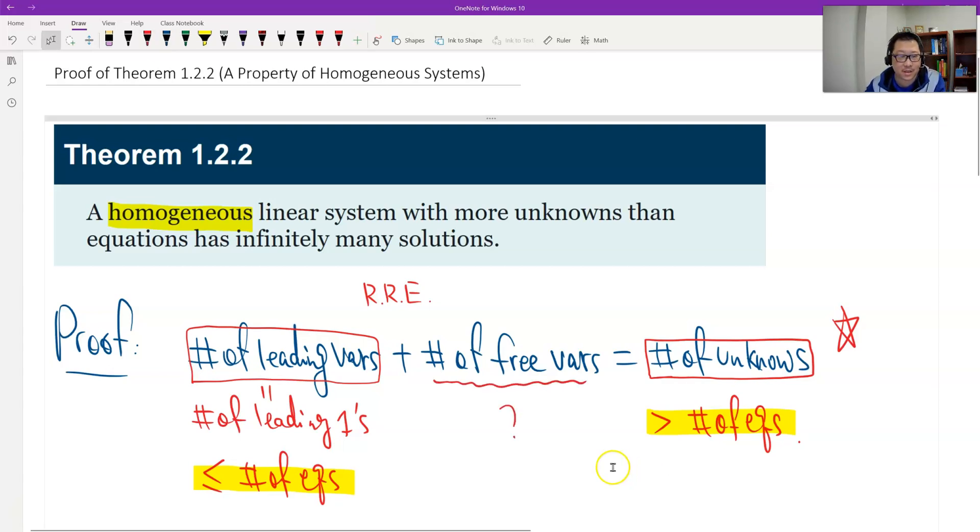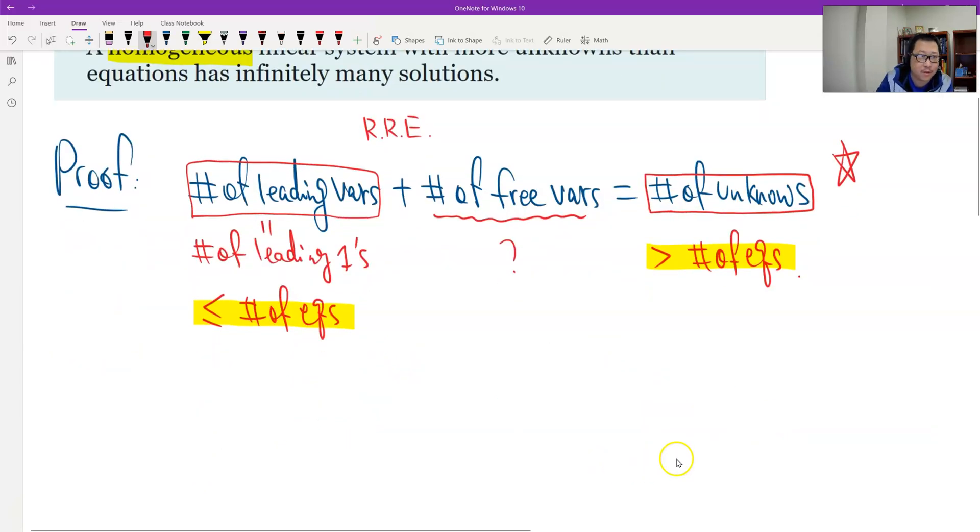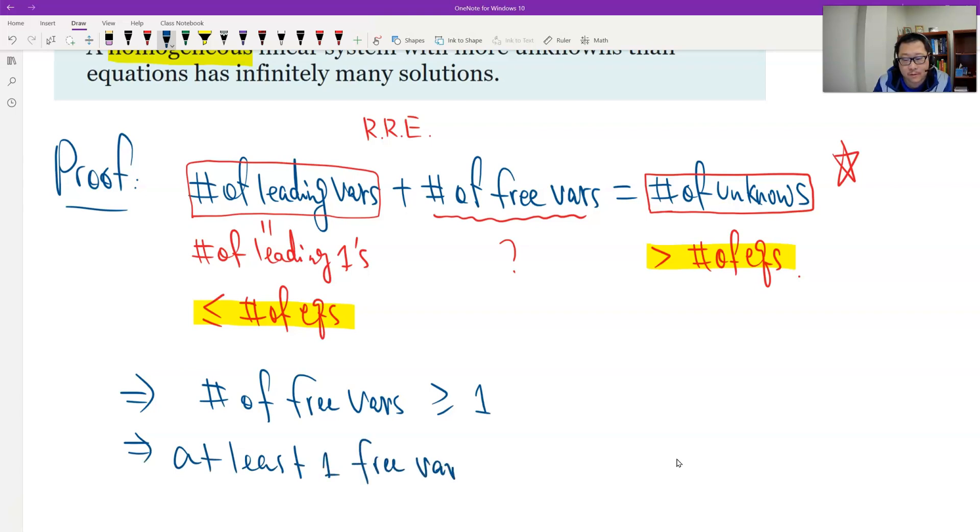Definitely this should be greater than zero, right? So we can solve the number of free variables is greater than or equal to one. So at least one free variable exists.